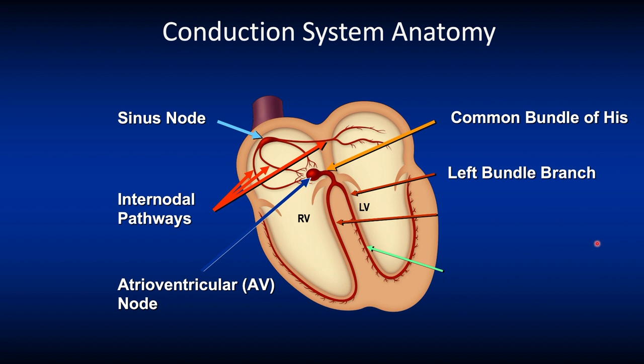The Left Bundle Branch arises as a series of radiations or fascicles at right angles to the Bundle of His. A superior anterior fascicle courses down the anterior aspect of the Intra-Ventricular Septum to the Anterolateral Papillary Muscle where it breaks up into the Purkinje Network. The inferior posterior fascicle is shorter and thicker, passing posteriorly to the base of the Posteromedial Papillary Muscle where it branches into the Purkinje Network.